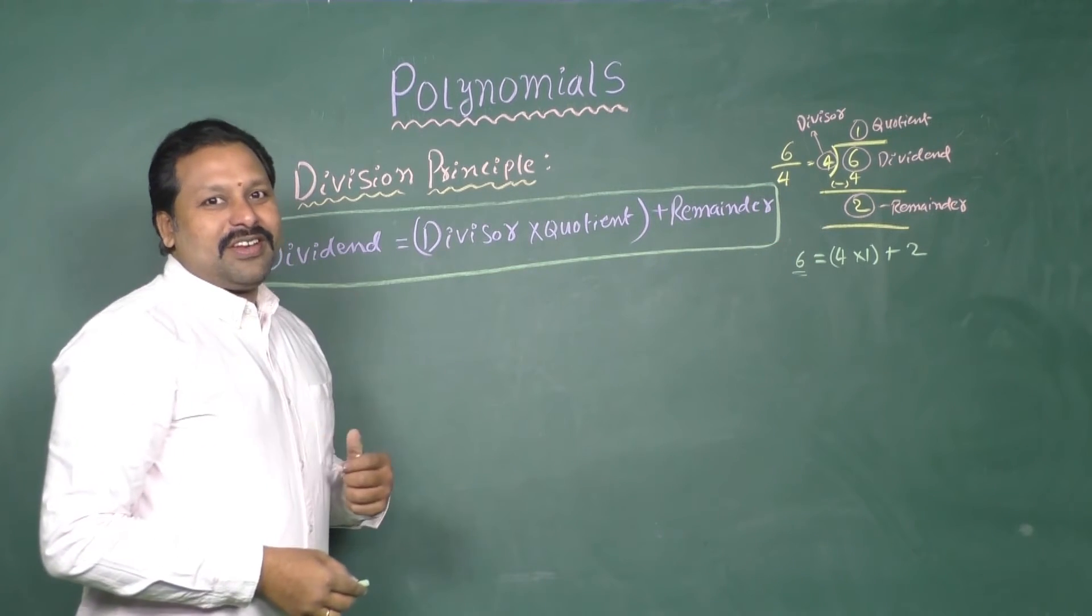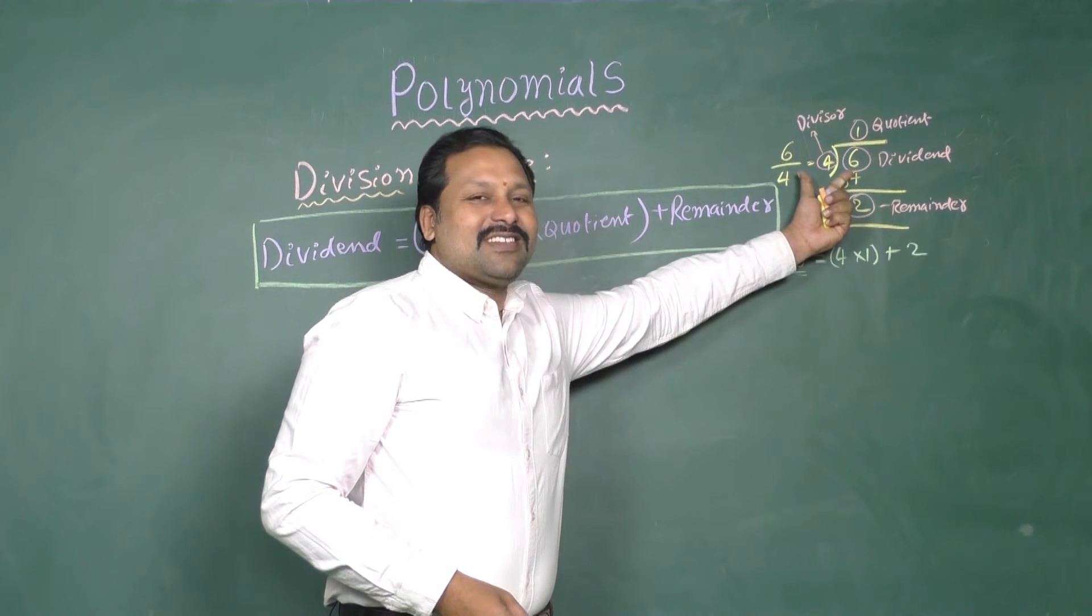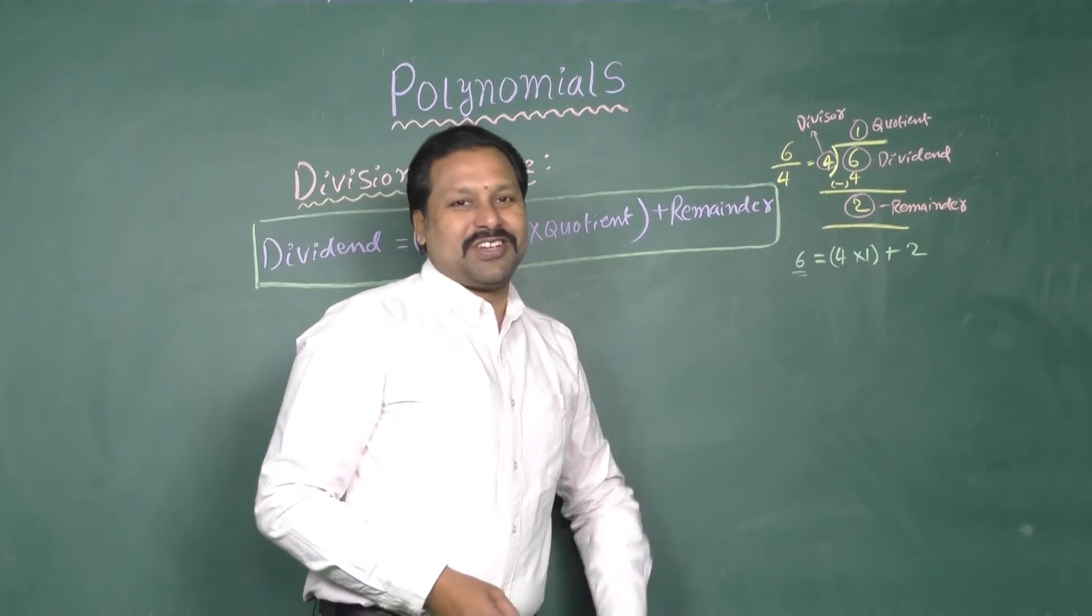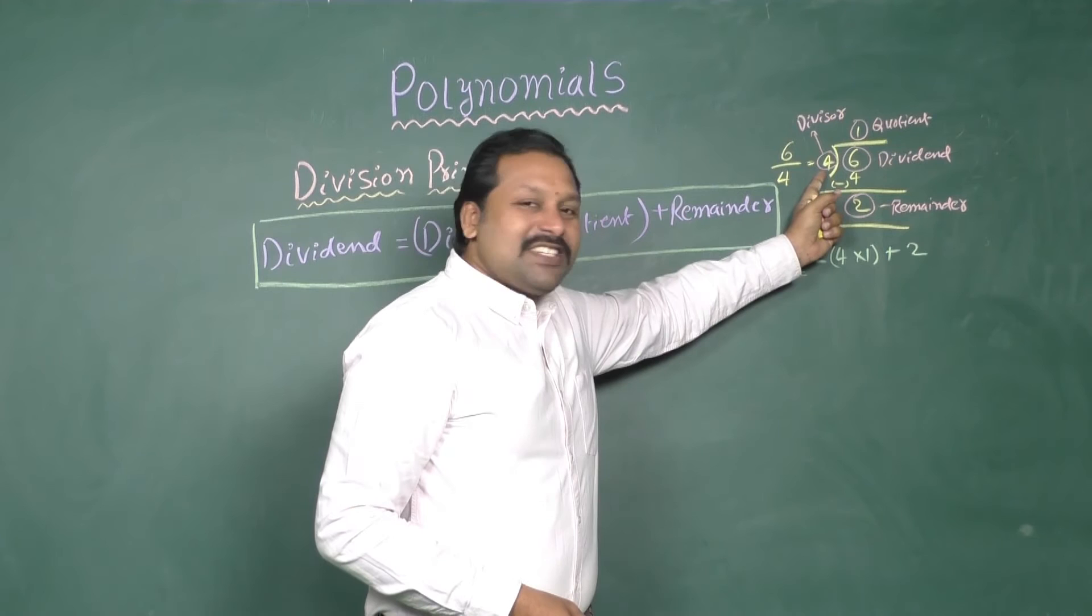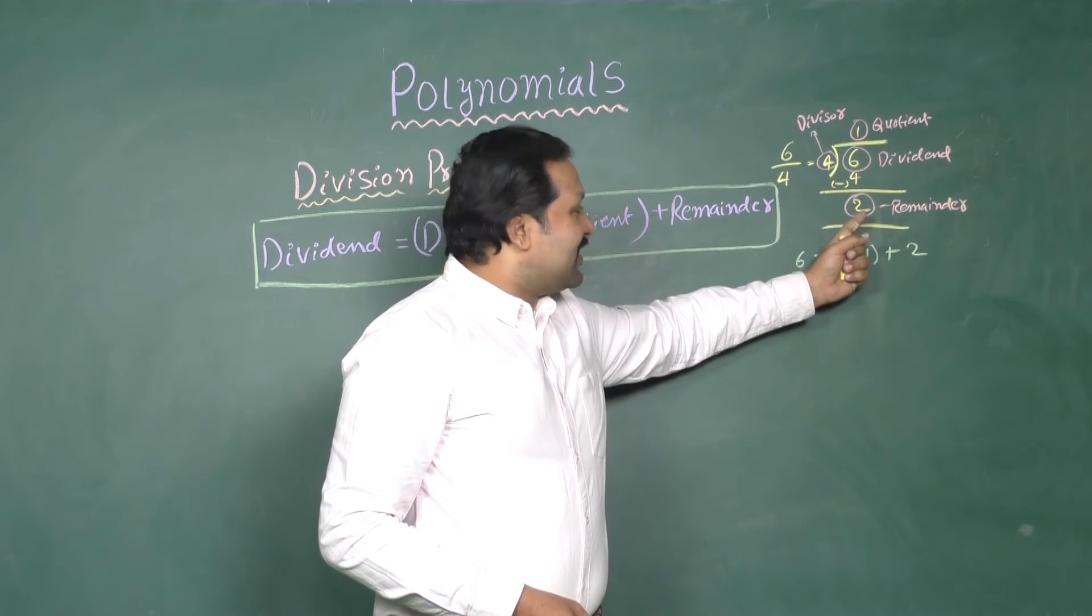In this chapter, replacing numericals, we have Polynomials. And one more observation: Divisor is 4 here, Remainder is 2 here. That means,